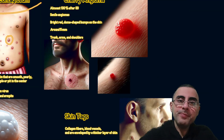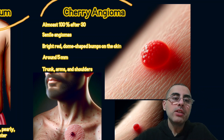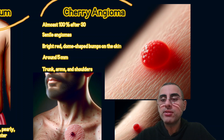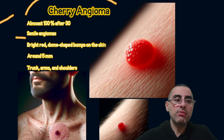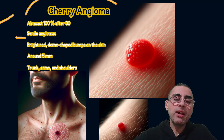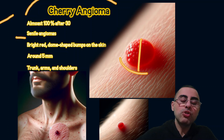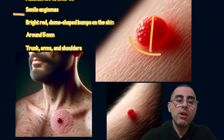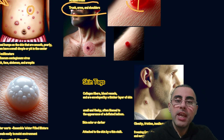The fifth most common cause of skin growth is cherry angioma. It affects almost everyone after 30 years old and is a very common condition. It is also known as senile angioma. It is a bright red, dome-shaped bump on the skin, around five millimeters in size. It appears on the trunk, arms, and shoulders, though it can develop almost anywhere on the body.